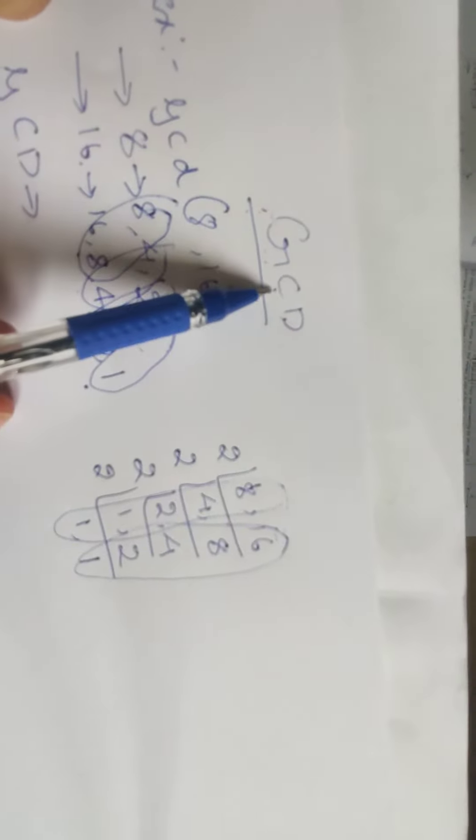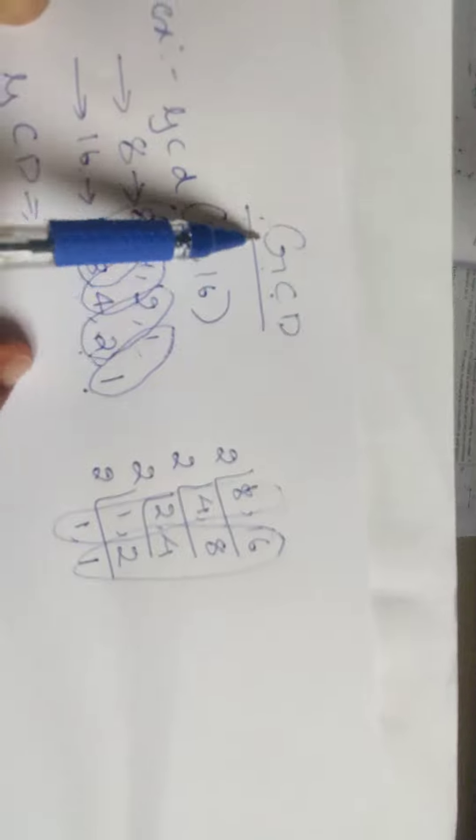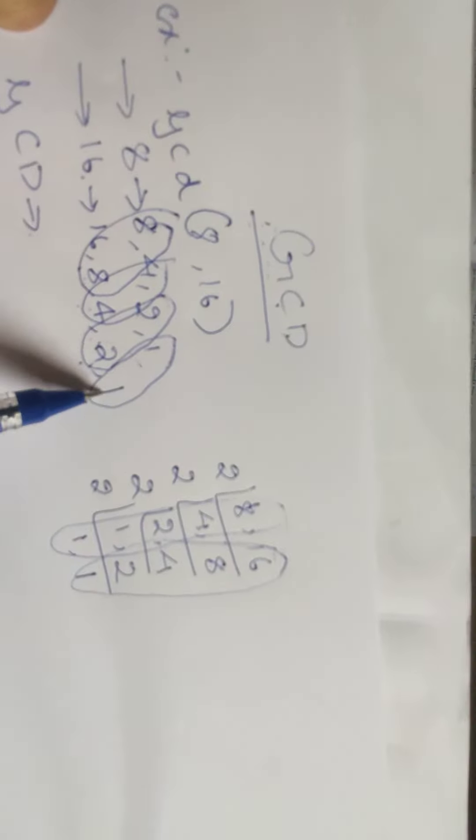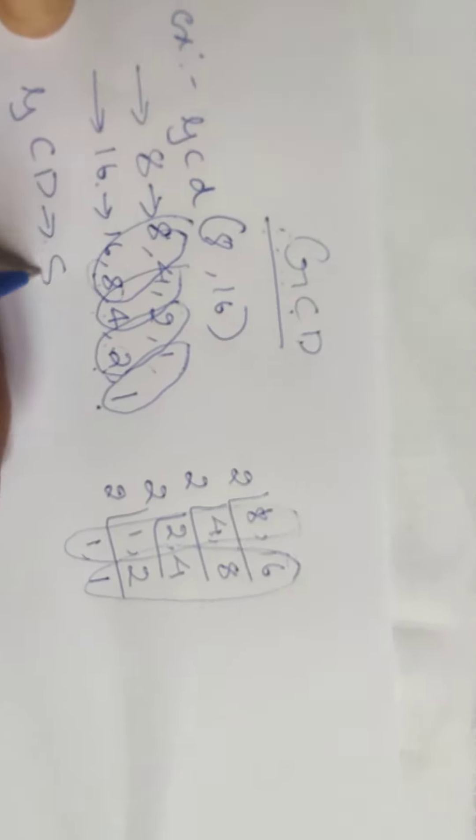The greatest among the common divisors is 8. Hence, your GCD is 8.